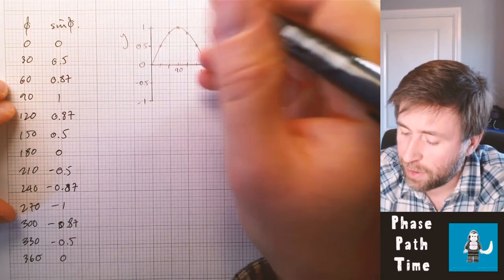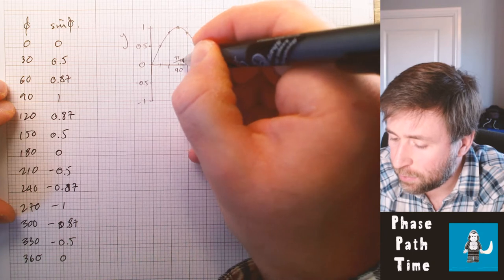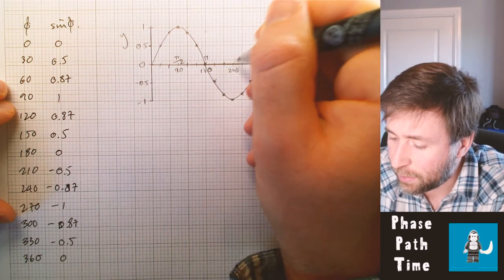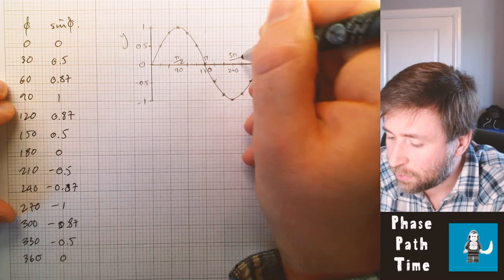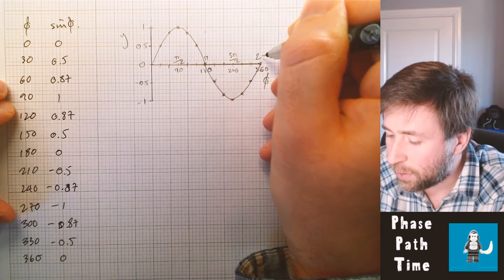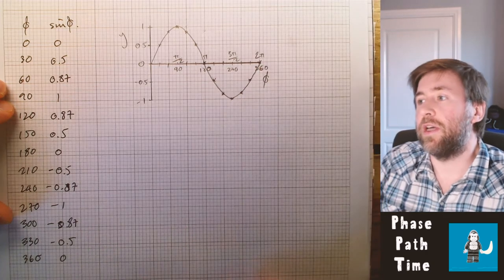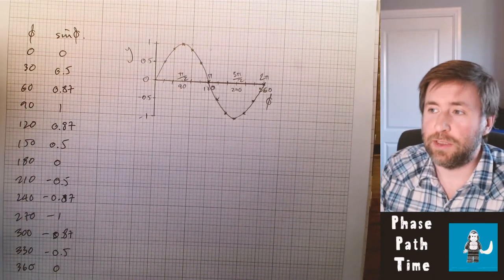So I could just as easily have on here pi over 2, pi and 3 pi over 2 and just 2 pi. So those angles are exactly the same. The maths works in exactly the same way.